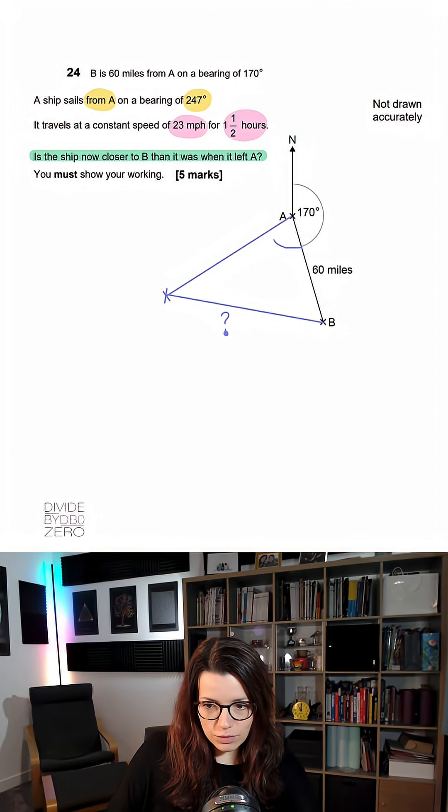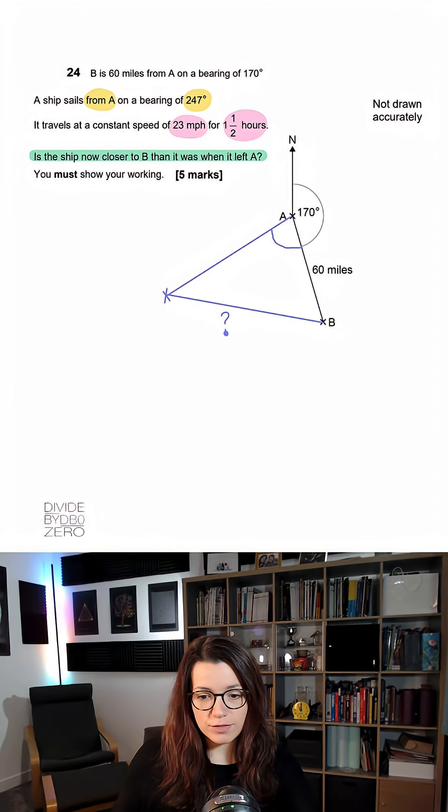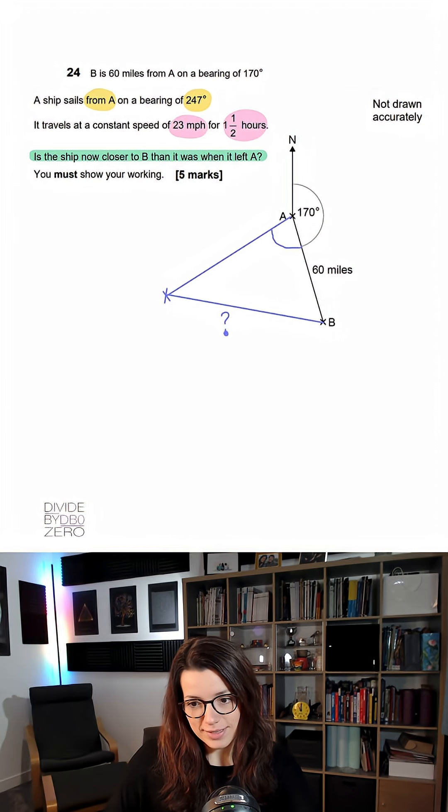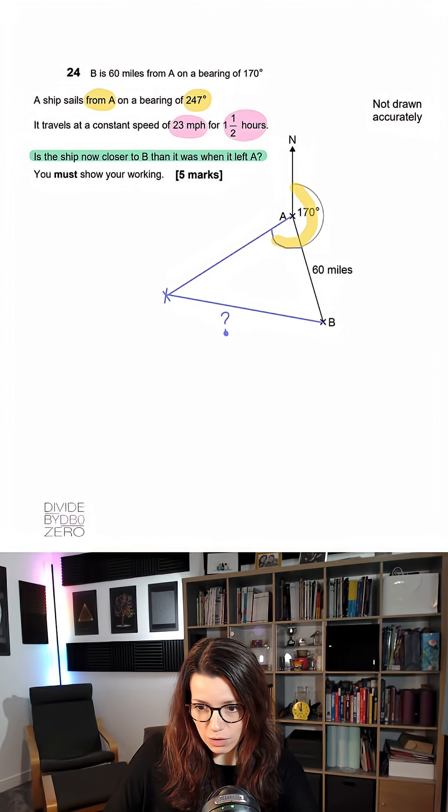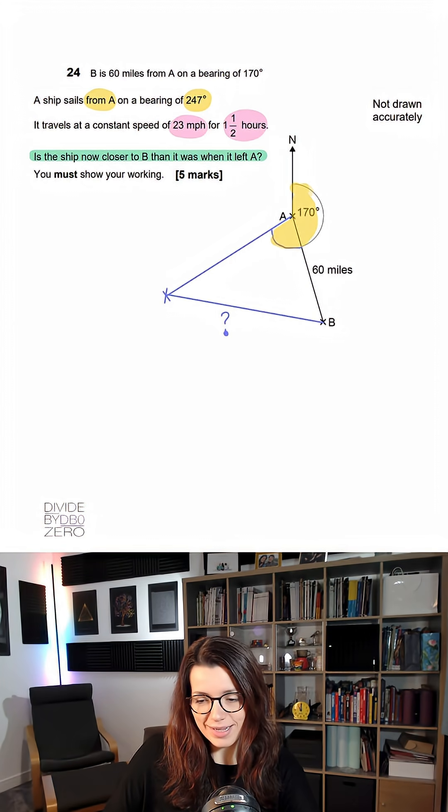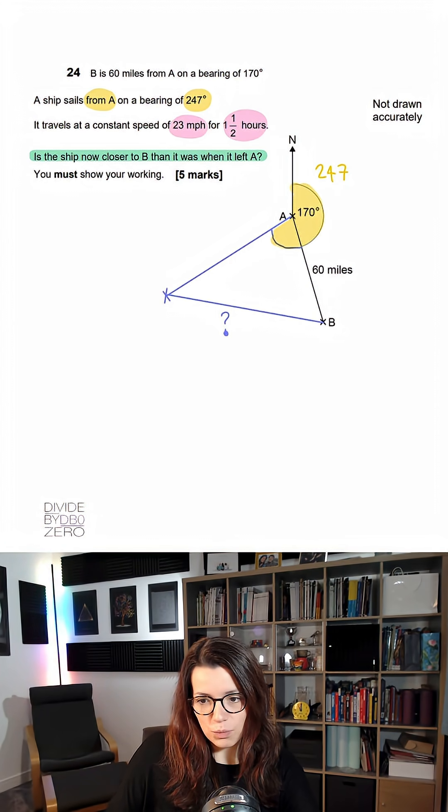Now to work out this angle, we can use the fact that the ship sailed on a bearing of 247 degrees. Remember bearings are always measured clockwise from north. So it's this angle here that we want to be 247 degrees.